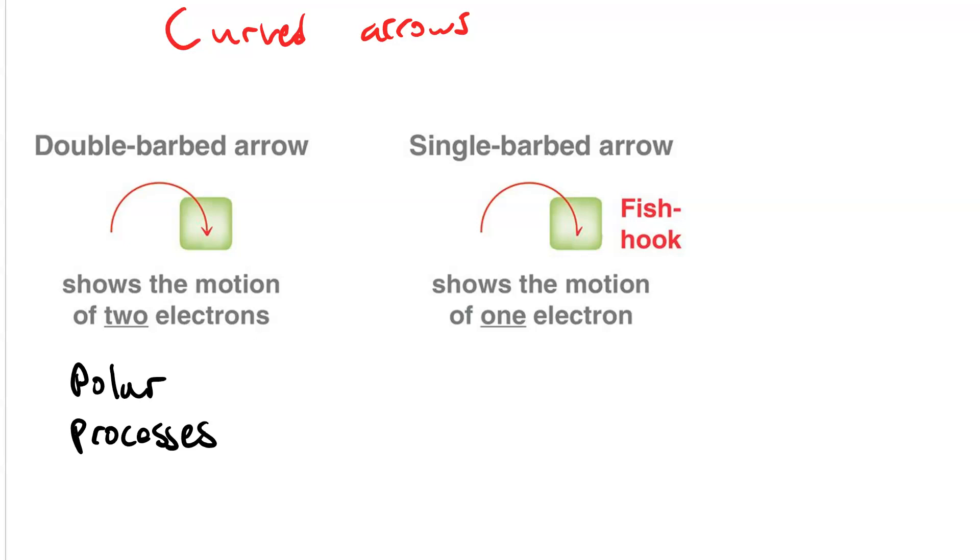A single barbed arrow is called a fish hook. Look right here, it looks like the tip of a fish hook. And this signifies the motion of one electron. This is what we use for radical processes.